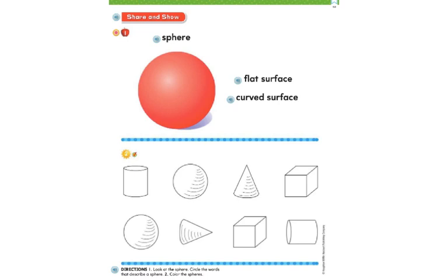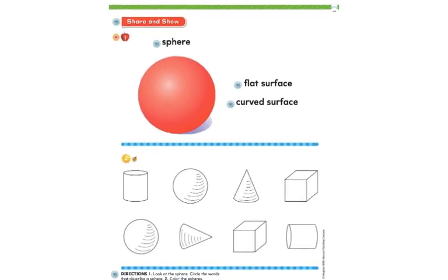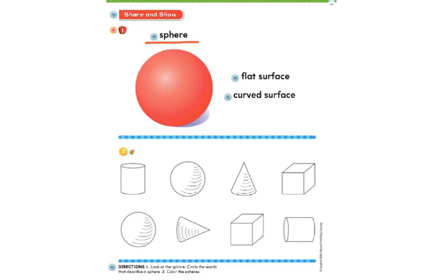The next page — what shape do you see at the top of the page? The red shape. It is called a sphere. How many flat surfaces do you see on this sphere? No, nothing is flat. The whole surface is rounded, so we are going to cross it out. There are no flat surfaces on this sphere.